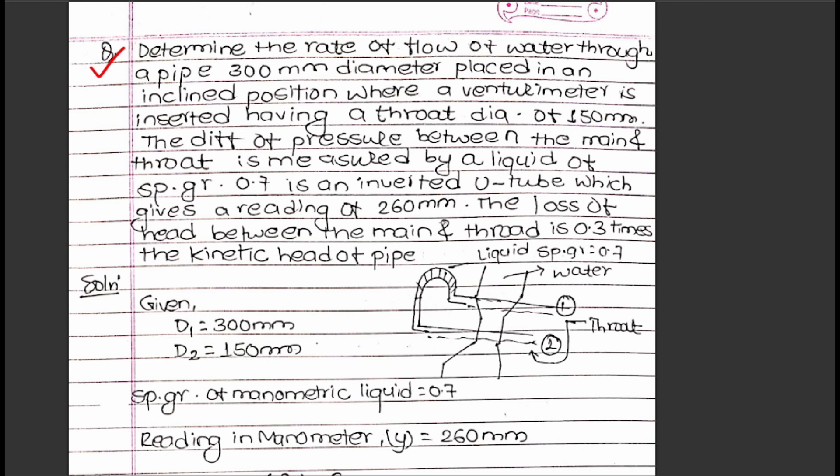The loss of head between the main and throat is 0.3 times the kinetic head of the pipe. This is a question on an inclined venturimeter with an inverted U-tube manometer connected.